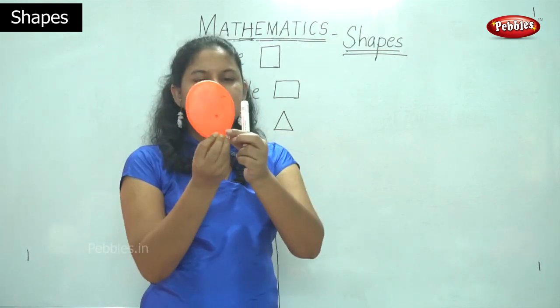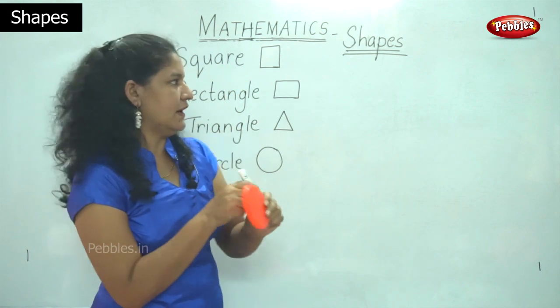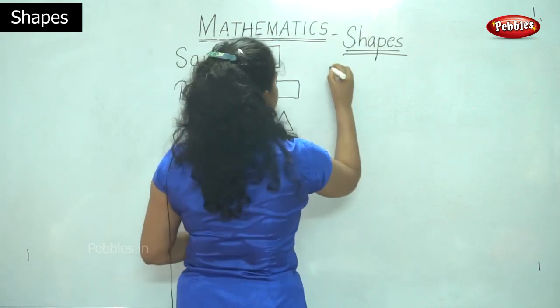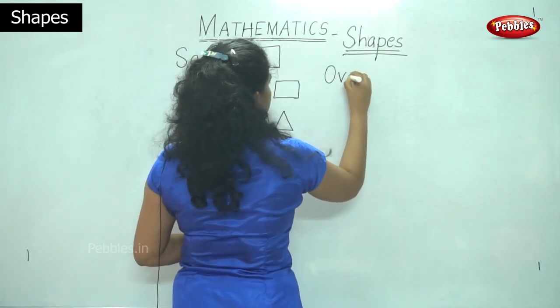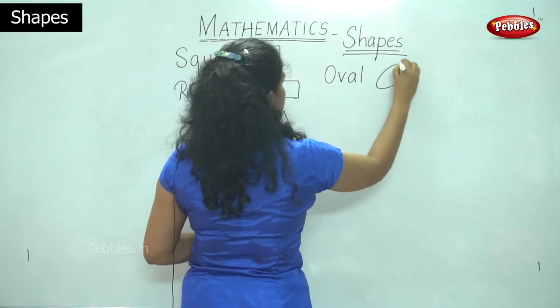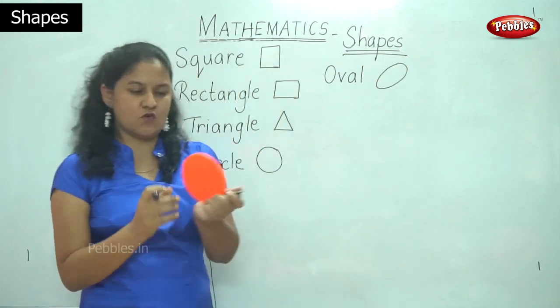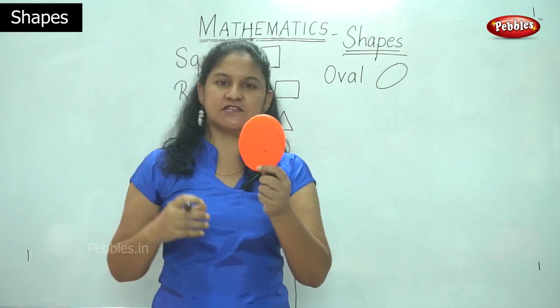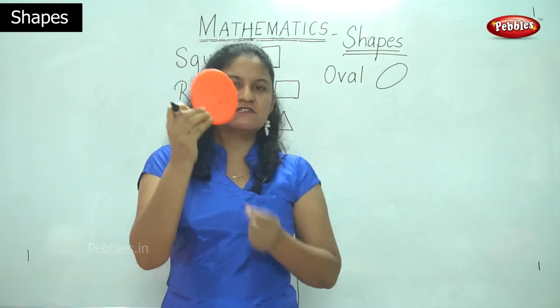So as you see, this is called an oval. It is an oval. So it is oval in shape. For example, an oval is the egg that we eat every day. So this is the oval.